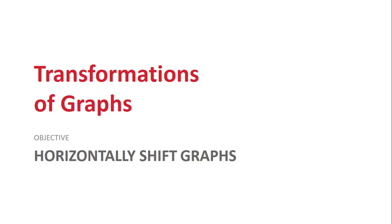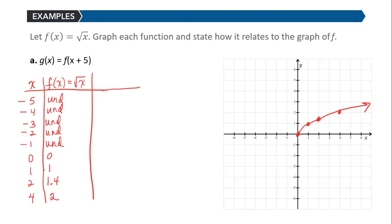In this video we continue our study of transformations of graphs and look at what changes cause a function to shift horizontally. Let's consider the function f(x) = √x and we want to graph the following functions and state how they relate to the graph of f.